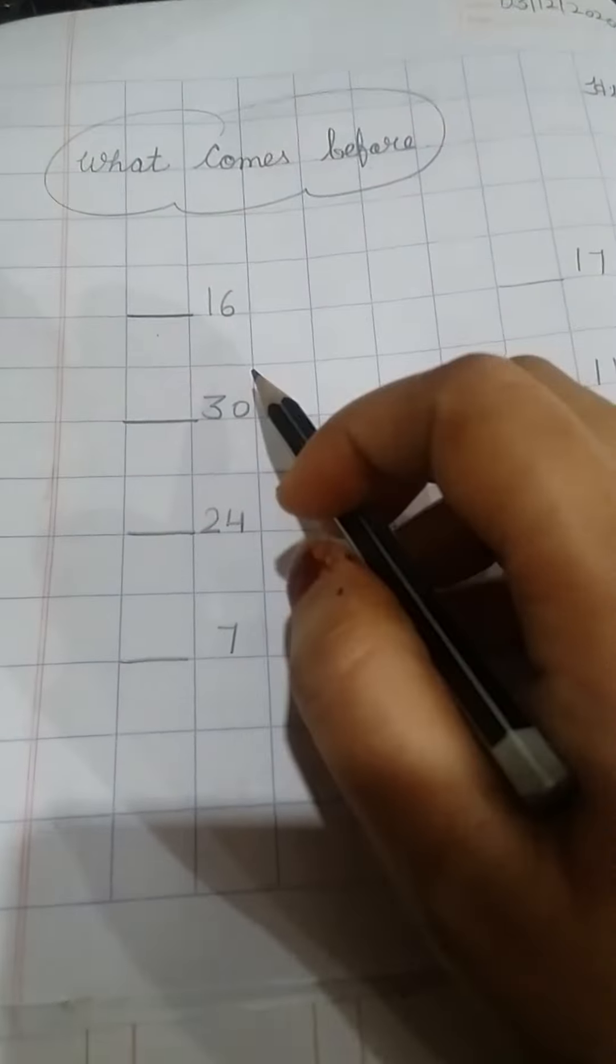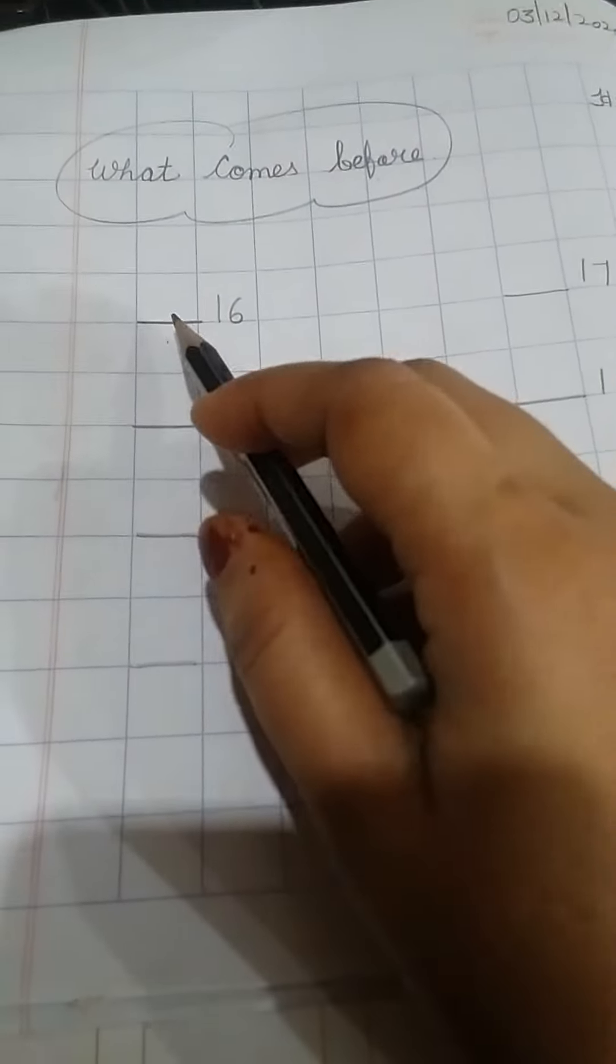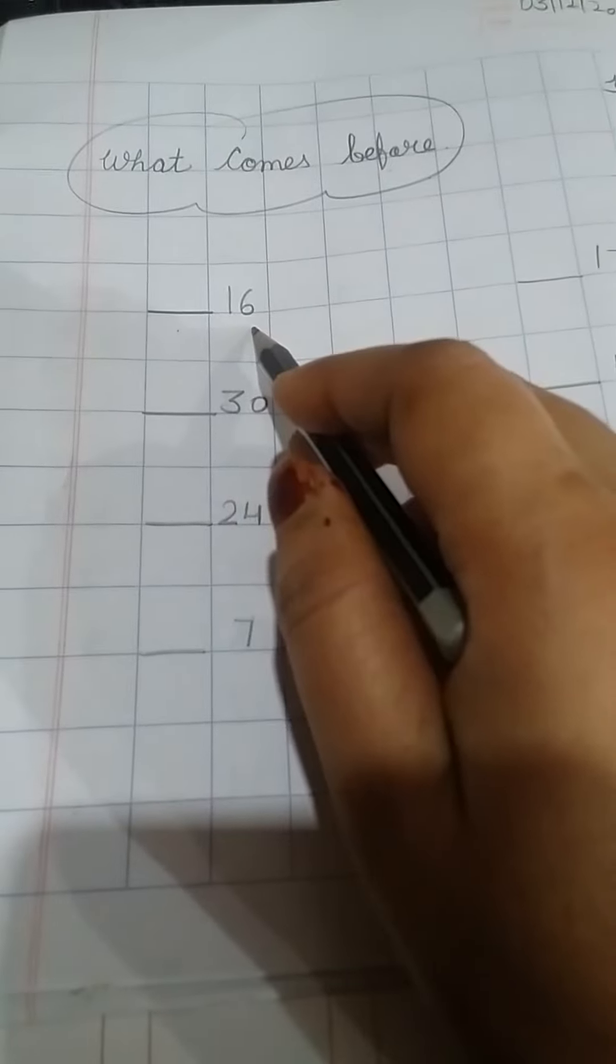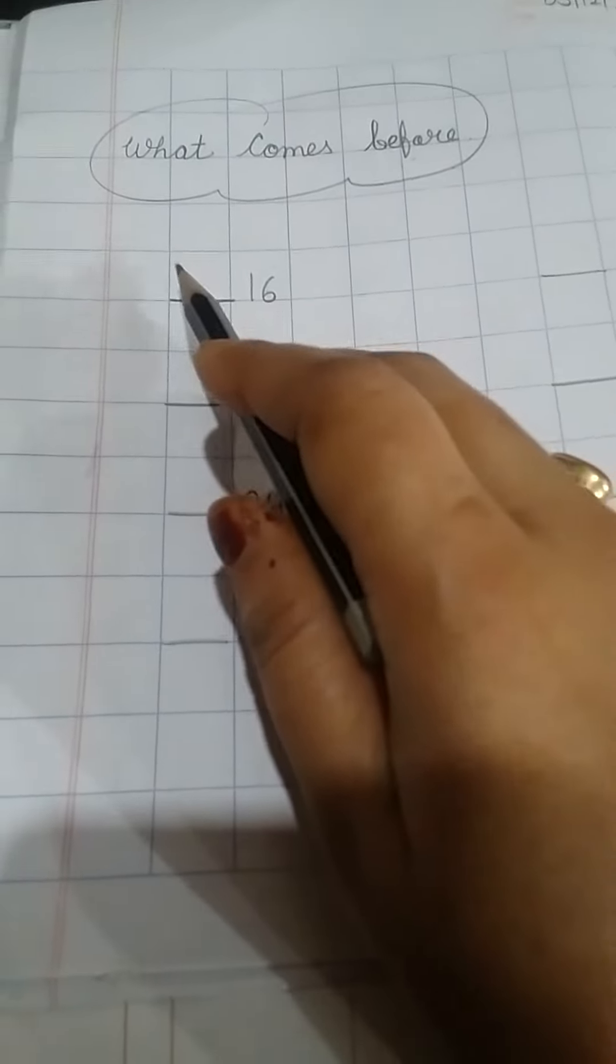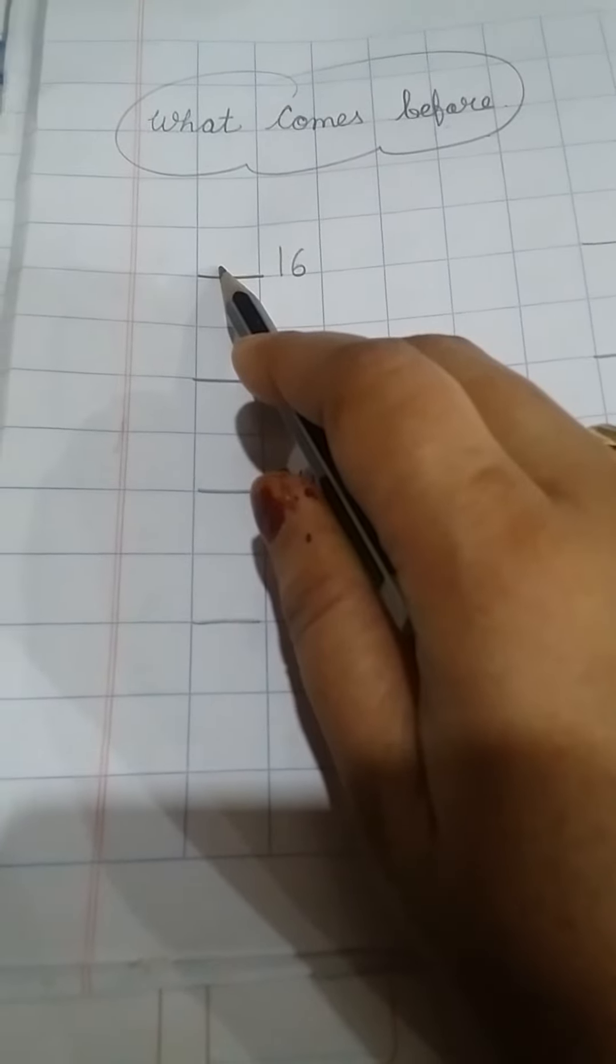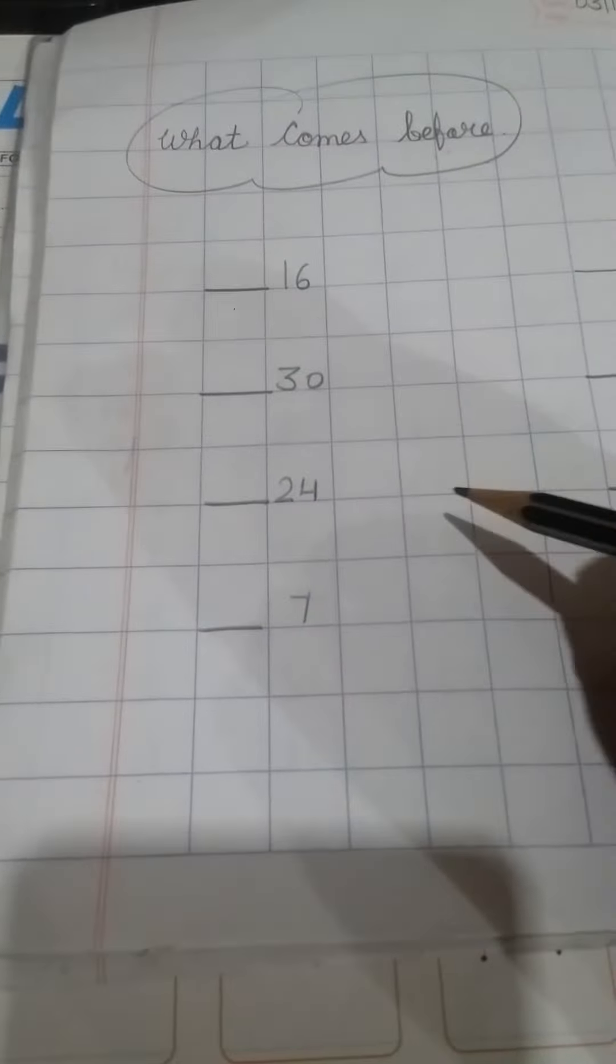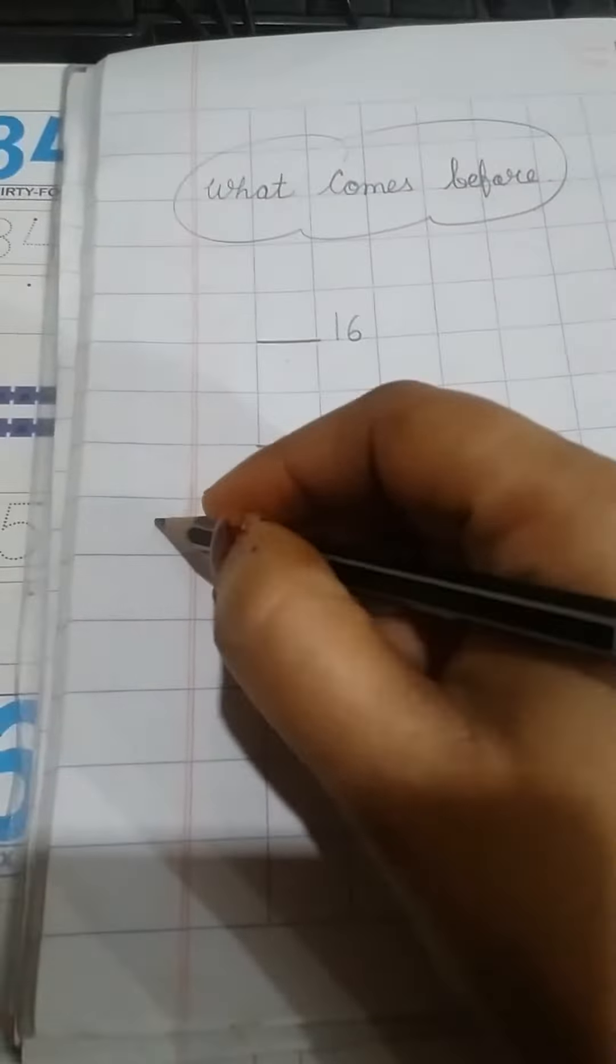Now what do you need to do? Look, the first number is written here. I have written here 16. The first number is written here. What do we need to do? That is why we need to read reverse counting. We will write here, reverse counting 16.